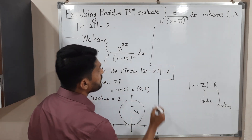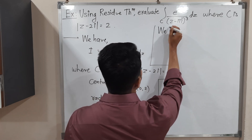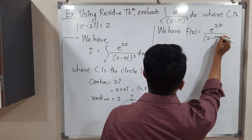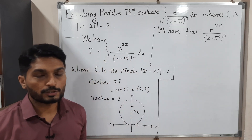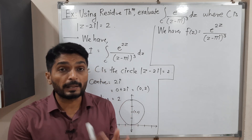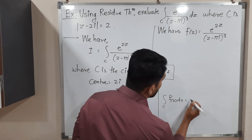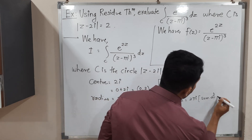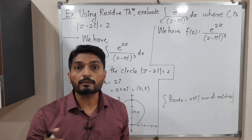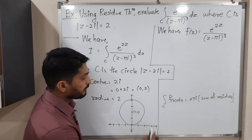The next important thing is the function. We will call it f(z). We have f(z) = e raised to 2z upon (z minus πi) cubed. We have to find the value of this integral with the help of Cauchy's residue theorem. So now it's time to recall the statement of Cauchy's residue theorem: the integration over C of f(z) dz is equal to 2πi times the sum of residues. If a point lies outside the circle, no need to find any residue.